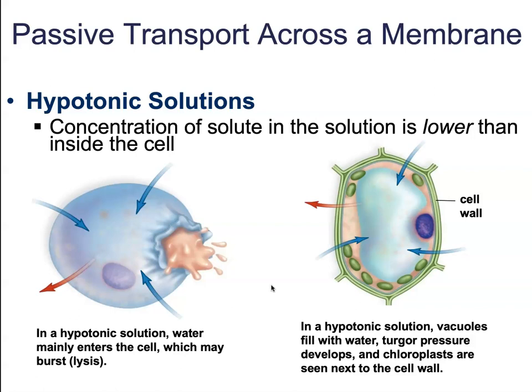Solutions with a lower solute concentration than the cell are said to be hypotonic — 'hypo' meaning less than, 'tonicity' referring to the strength of the solution. If a cell is placed in a hypotonic solution, it will swell because water rushes in. More water comes in than flows back out, and this can cause cells to swell up so much that they burst like a balloon. Any solution with a salt concentration lower than 0.9% is hypotonic to red blood cells. Animal cells placed in a hypotonic solution will swell and even burst — this is called cytolysis ('cyto' meaning cell, 'lysis' to burst). In red blood cells specifically, this is called hemolysis ('heme' referring to red blood cells, 'lysis' to split apart).